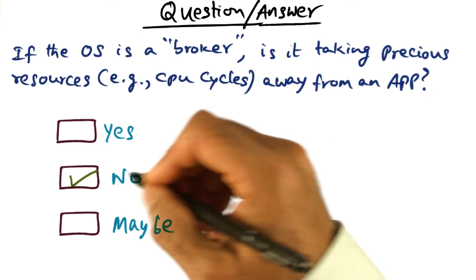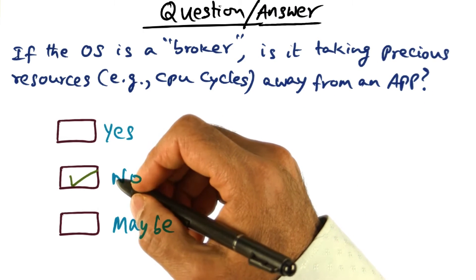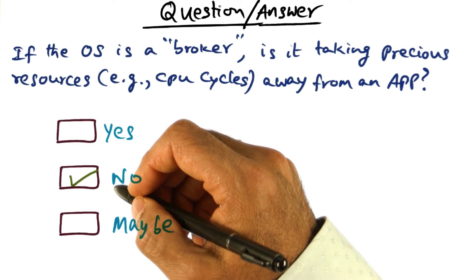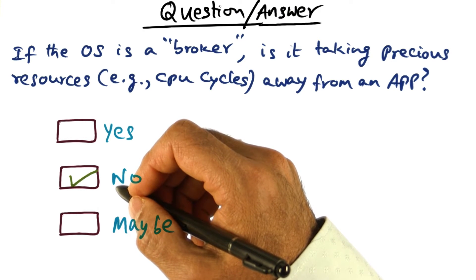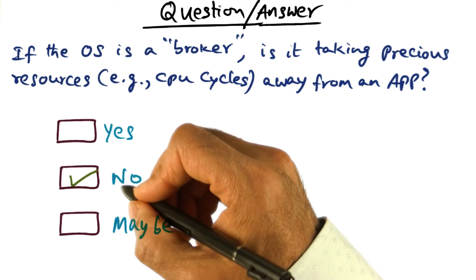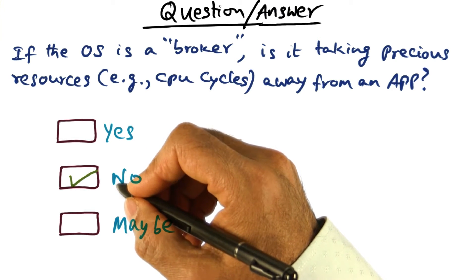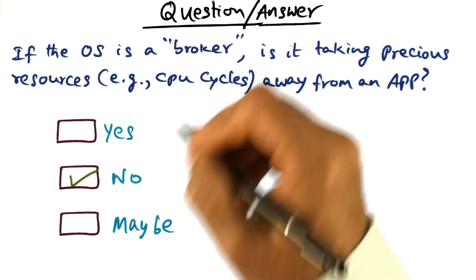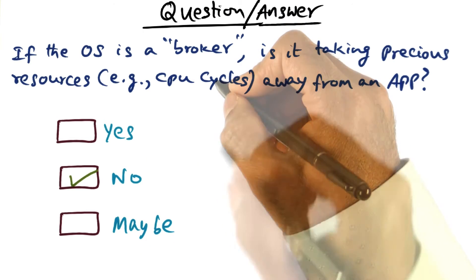The operating system is also a program and has to run on the CPU, as we saw when we talked about how an operating system deals with external interrupts. So it is going to need some resources, CPU and memory cycles, to do its work.